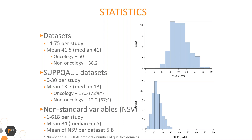For each study we calculated the average number of QNAM values per SUPPQUAL dataset, and this number varies within studies from 1 to 26.4, with a mean of 5.10. There is also a difference in this property between oncology and non-oncology studies.